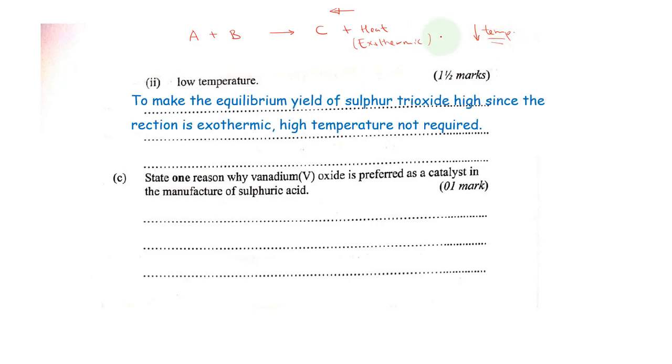In our previous example, sulfur dioxide and oxygen forming sulfur trioxide is also exothermic. And as such, high temperatures are not required. The forward reaction to produce our sulfur trioxide is favored by low temperature because we tend to release heat. To make the equilibrium yield of sulfur trioxide high.